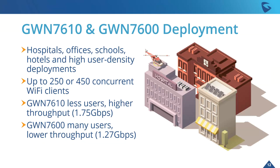The GWN 7610 and 76000 deployment is ideal for hospitals, offices, schools, hotels, and high user density deployments. It can handle up to 250 concurrent Wi-Fi clients on the 7610 or 450 on the 76000. The 7610 offers fewer users but higher throughput — great for office deployments where you may not have many people but where data transfer speed is critical, maintaining mobile productivity without slowdowns.